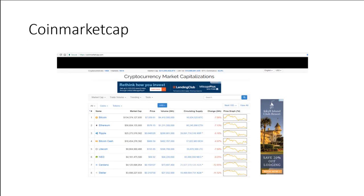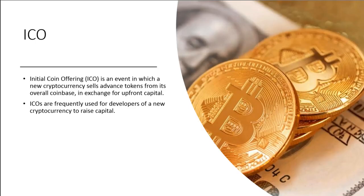CoinMarketCap is one of the websites you go to find out what the market capitalizations are, what the current ranking is, the market cap, the price, the volume, etc. That website has some good information, including graphs. And then an ICO is when a founder or founders of an altcoin generally decide to sell tokens and try to raise revenue for their coin offering — it's very similar to an IPO in the stock market. Let's proceed to the next module.